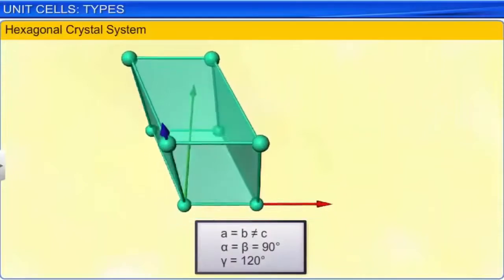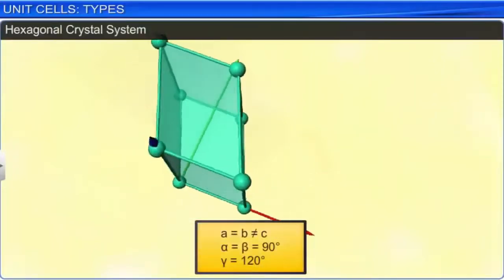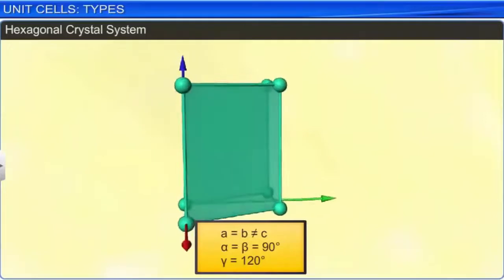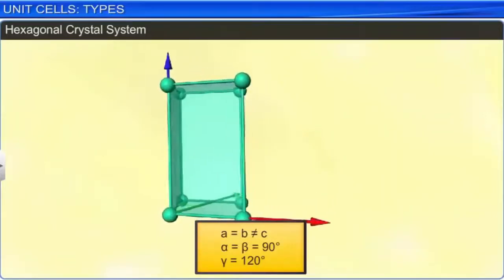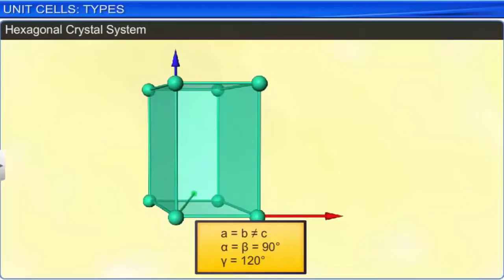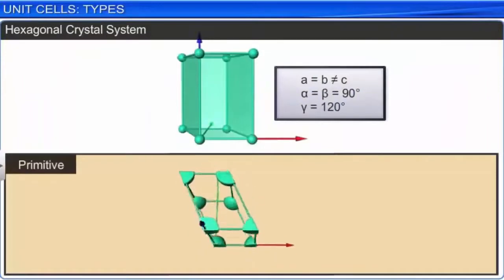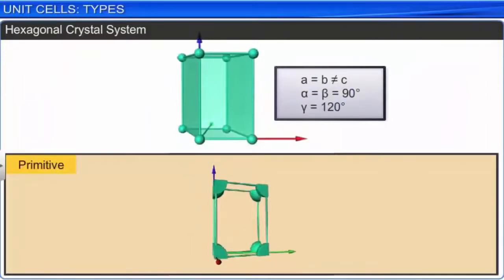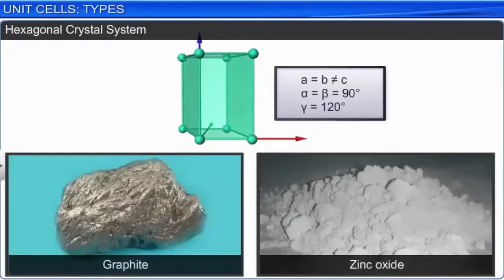In a hexagonal crystal system, two edges are of equal length, two angles are of 90 degrees, and one angle is of 120 degrees. The only possible lattice is primitive. For example, graphite and zinc oxide.